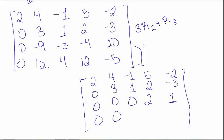For the next one, I'll do negative 4 row 2 plus row 4. Minus 12 plus 12 is 0. Minus 4 plus 4 is 0. Minus 8 plus 12 is 4. Minus 8 plus 12 minus 5 is 7.